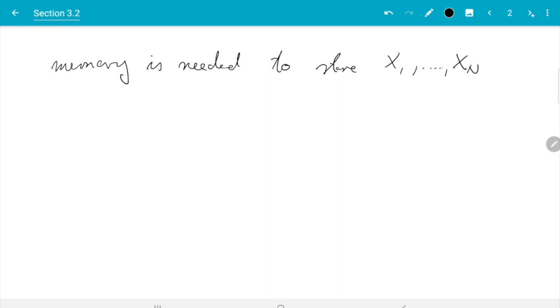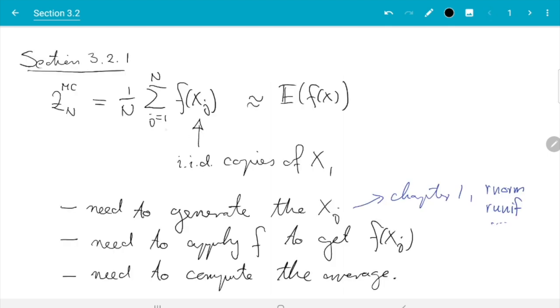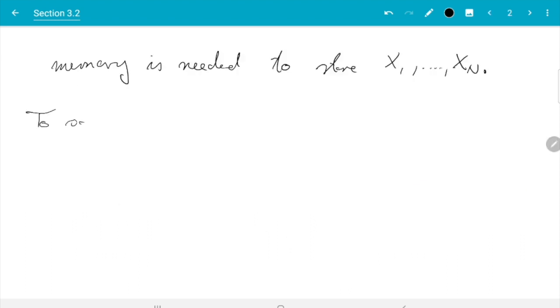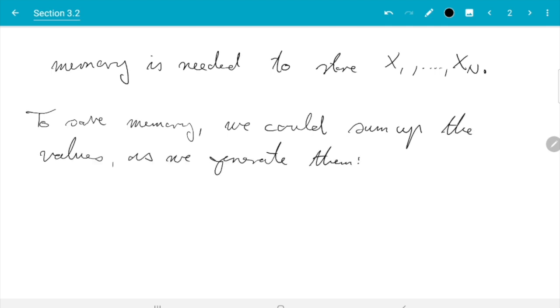There is a very simple trick. What we really want is just the sum. Instead of generating X_1 to X_N first and then computing the average, what we could do is generate these numbers one by one and add them all up. To save memory, we could sum up the values as we generate them. In the book I wrote that in form of an algorithm.